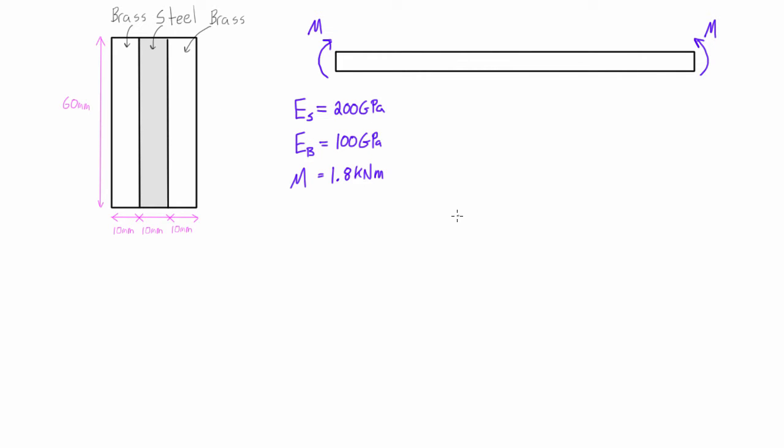So in order to solve this what we want to do is we want to eventually use our equation where the max stress is equal to Mc over I. Now if we want to use this equation we need to have a cross-section that has a single modulus of elasticity. So if you remember from the last video the way that we do this is we transform one of the materials into the other material and we increase or decrease the area by a factor of n.